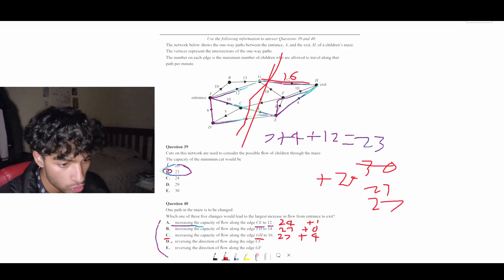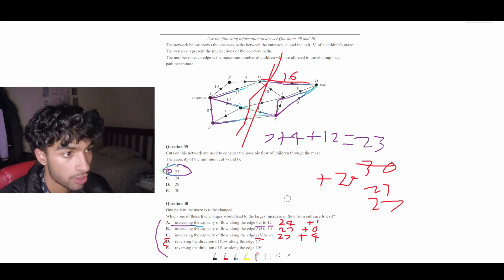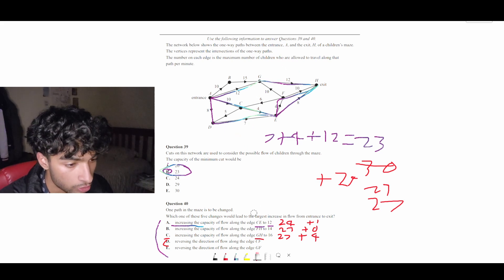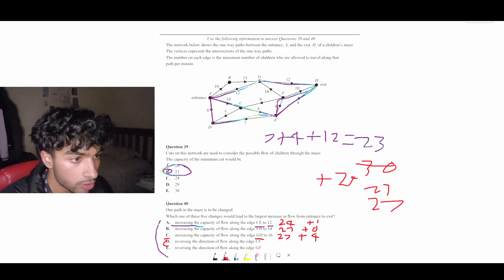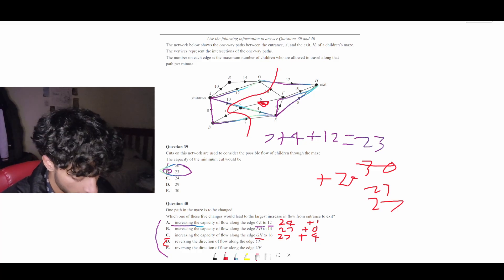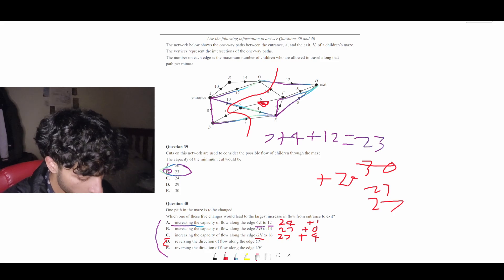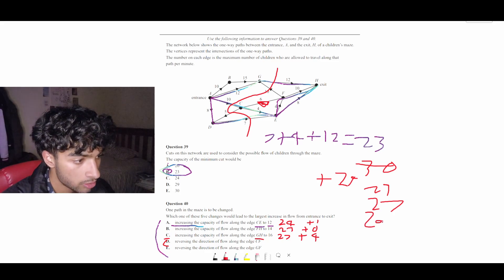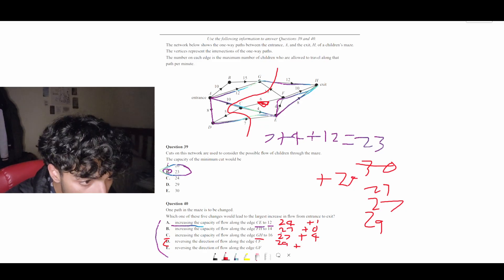Now these last two options are reversing the direction, which I think are pretty interesting. So let's go ahead and do those. Reverse the direction along CF. So CF is here and we're going to change that arrow to go this way. It's going to 10 and then to the 12. So 7 plus 10 plus 12 is 29. So it's 29, which is going to be an additional plus 6.